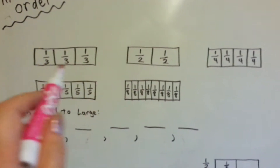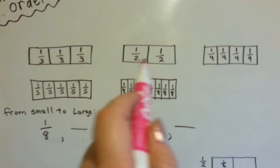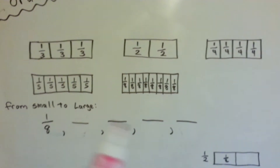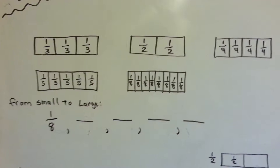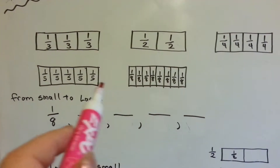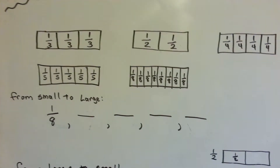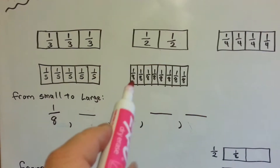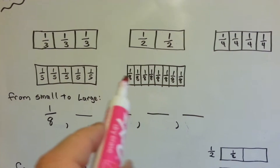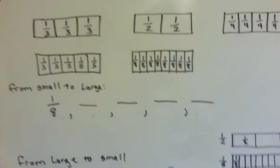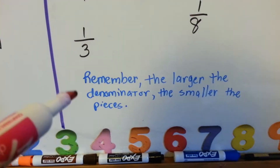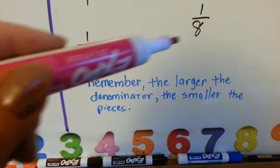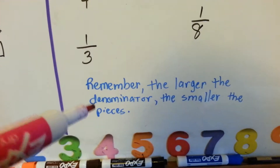This box is split into thirds, this one is split into halves, one-fourths, one-fifths, and one-eighths. The bigger the number is at the bottom, the smaller the pieces. The larger the denominator — this bottom part — the smaller the pieces are broken up into.